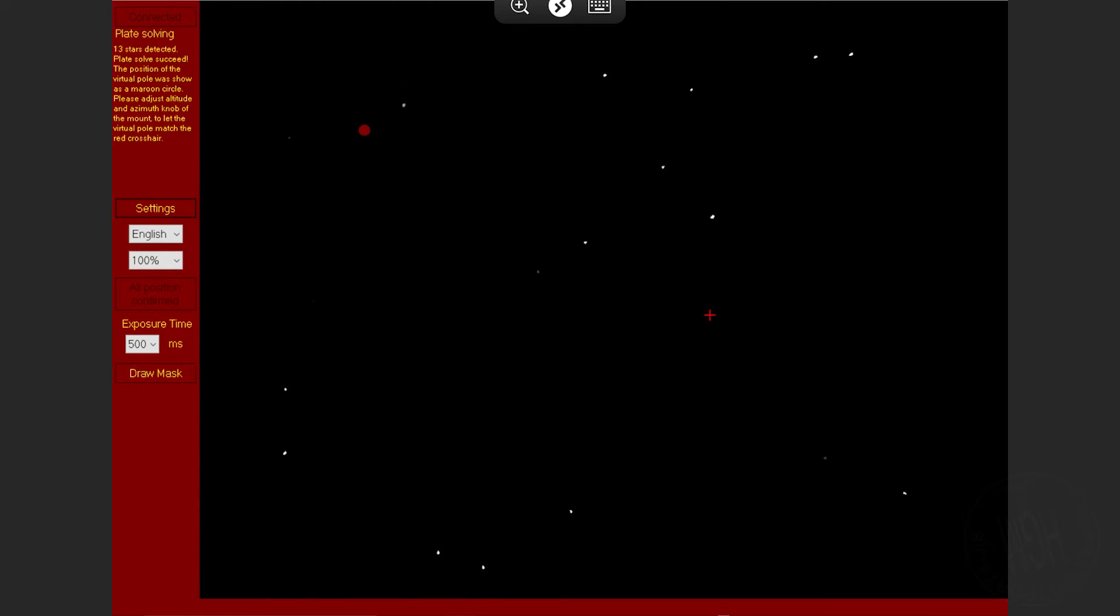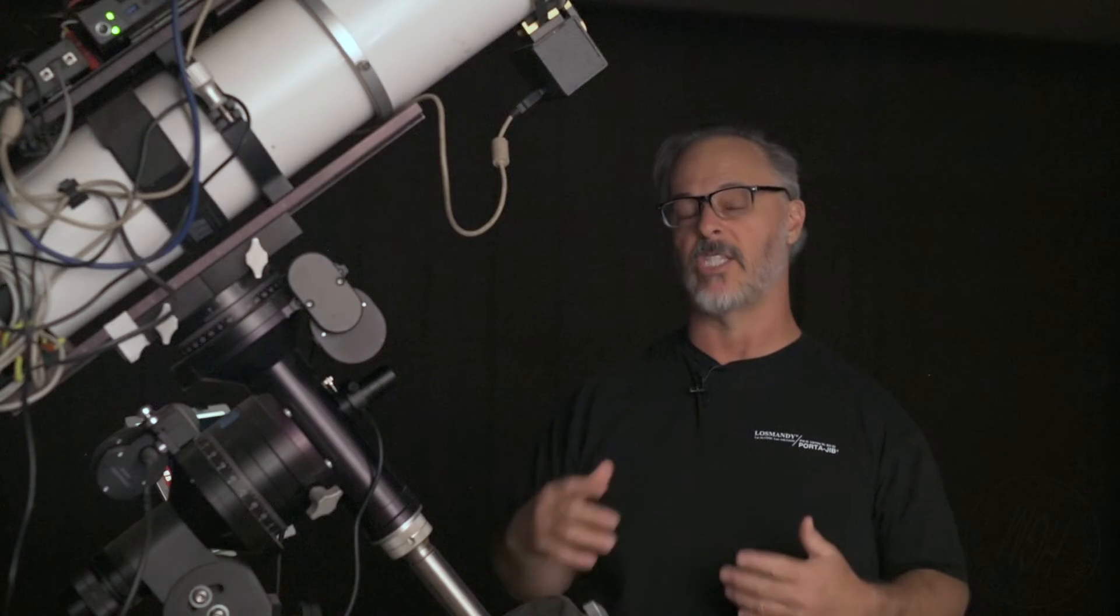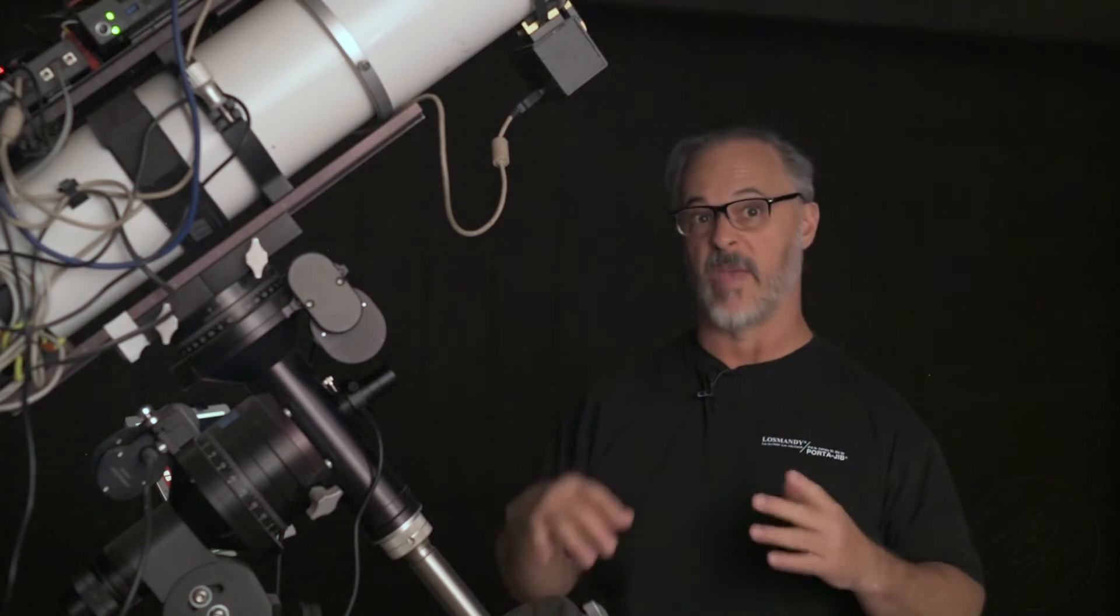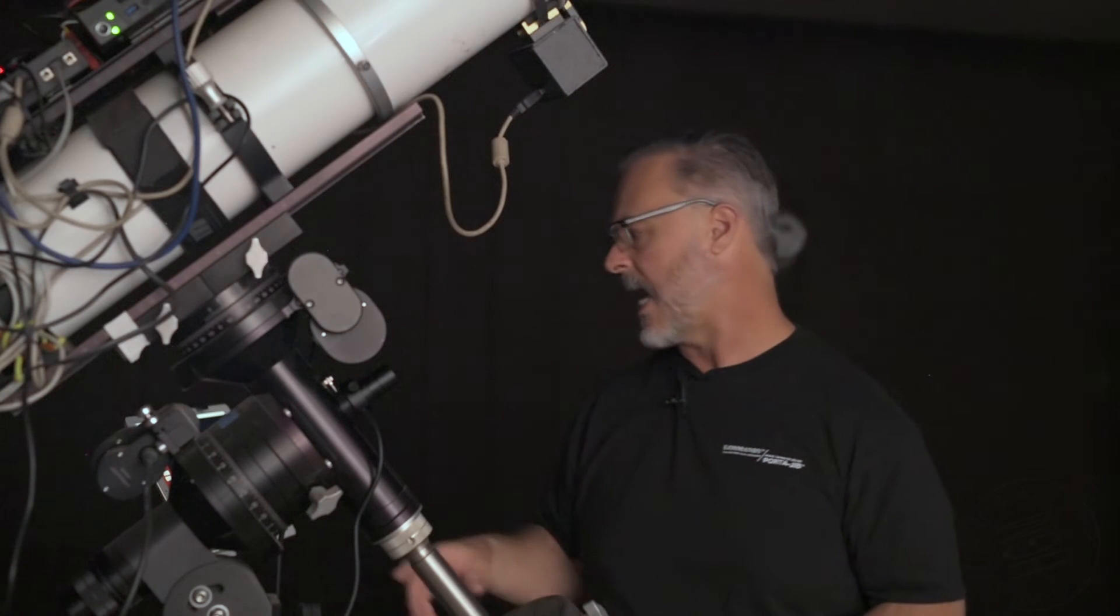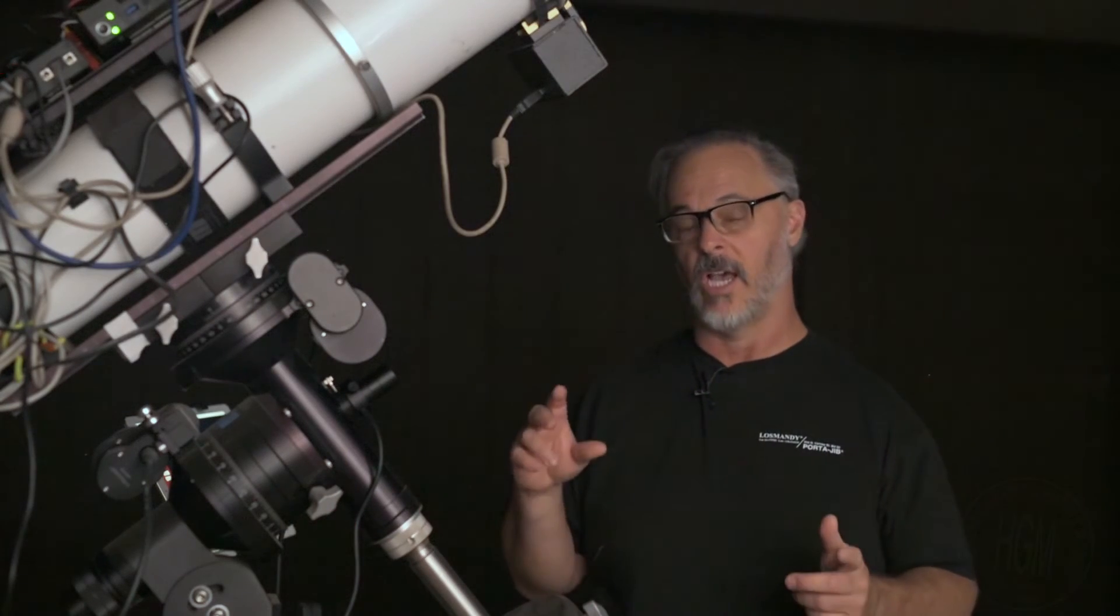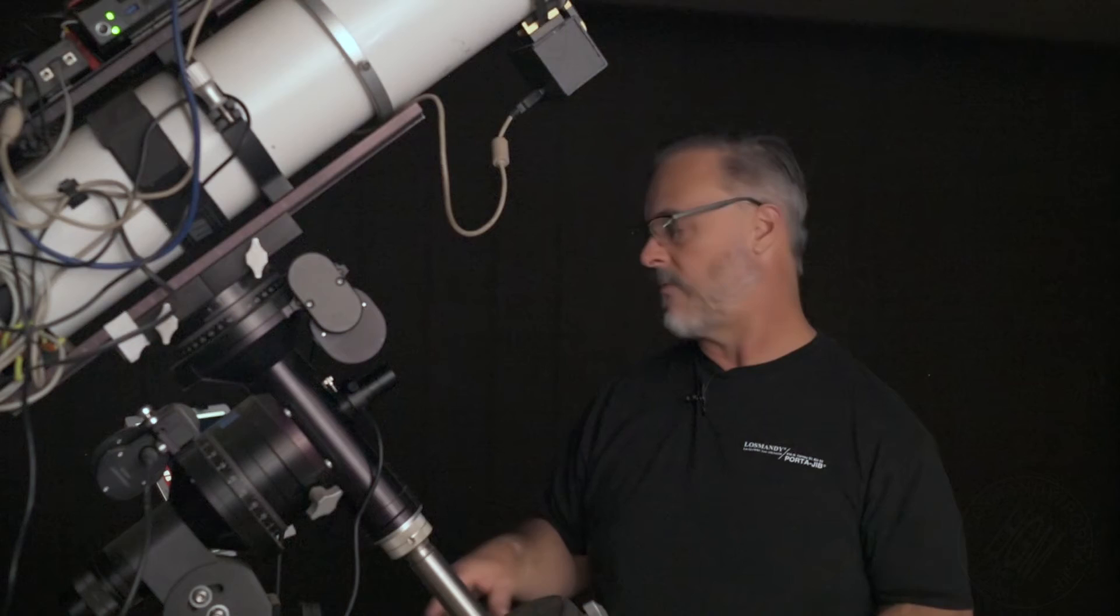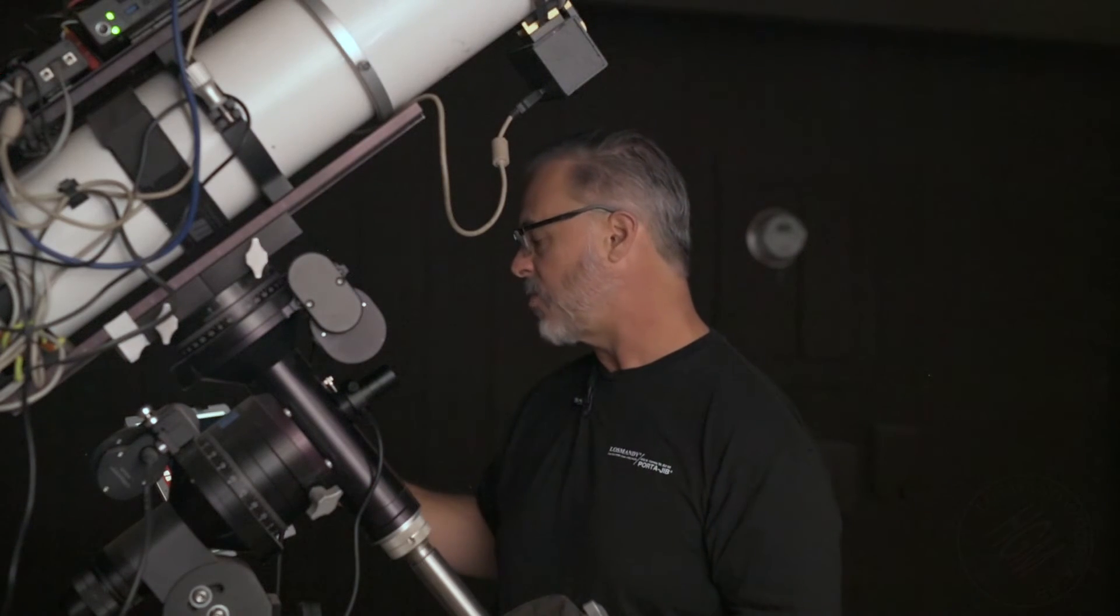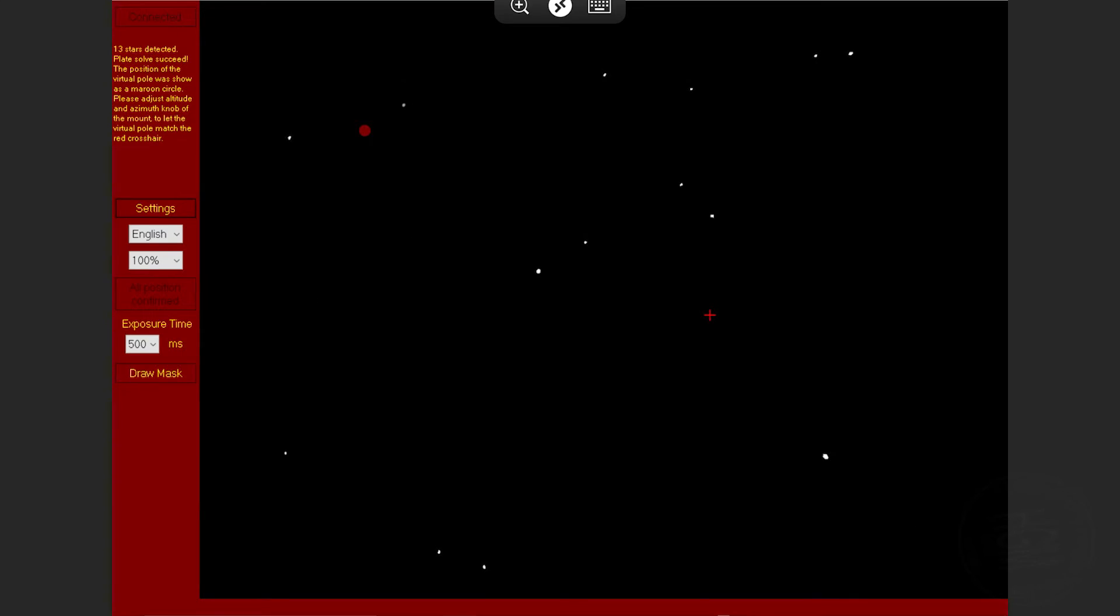So now what it says is it's plate solving and this is the really nice thing about iPolar is that it uses plate solving technology. So I don't have to do any sort of manual intervention in terms of figuring things out. It says 11 stars are detected. The position of the virtual pole is shown as the maroon circle. So we can see that here. And then what we're going to do is we're going to adjust the altitude and azimuth of the mount itself, which is where it's pointing, this red cross.